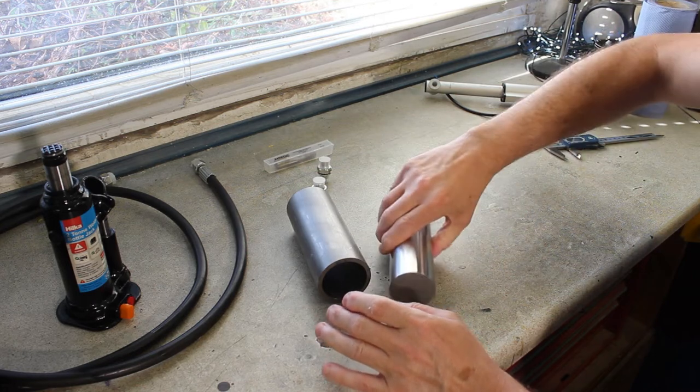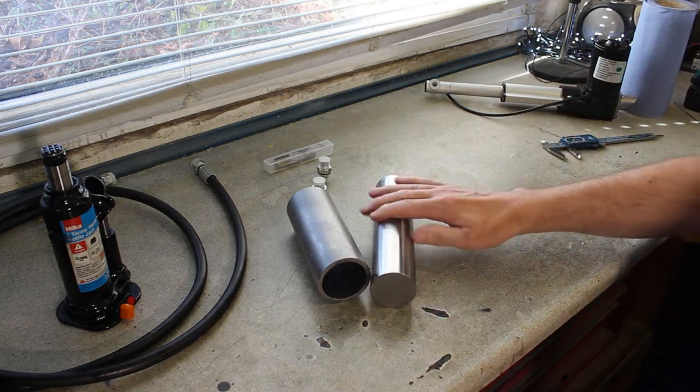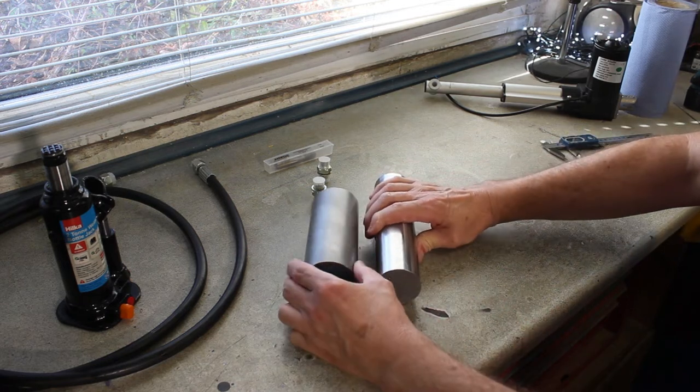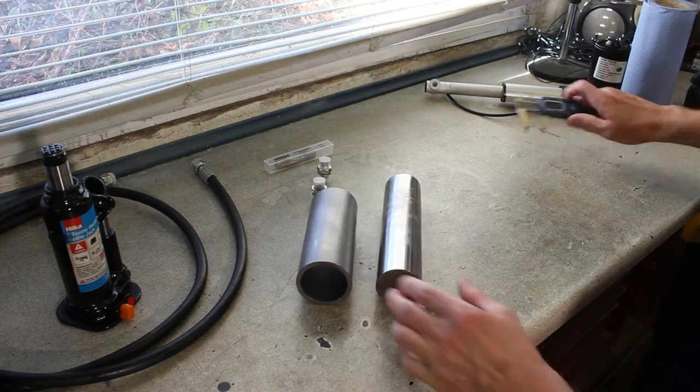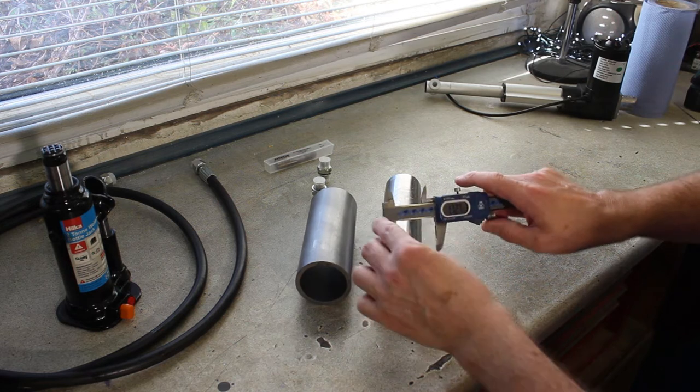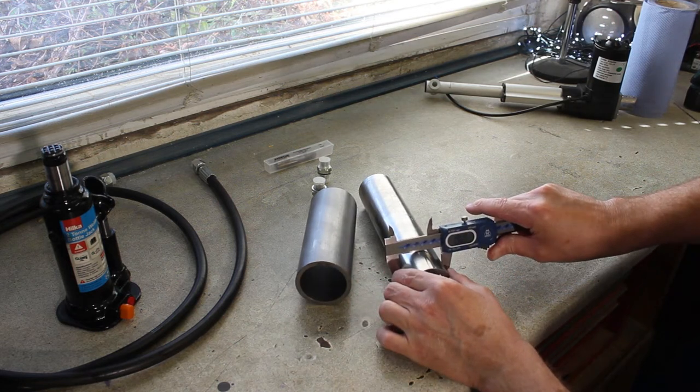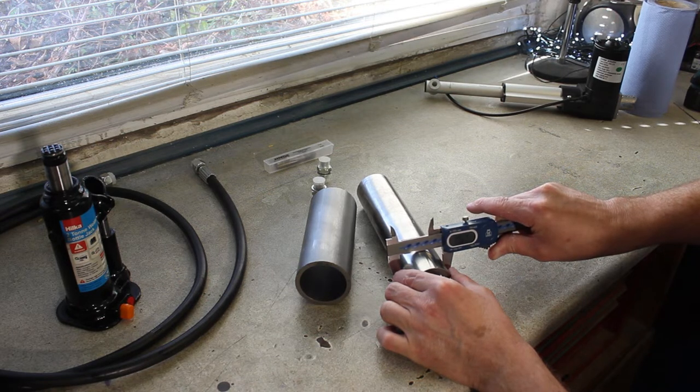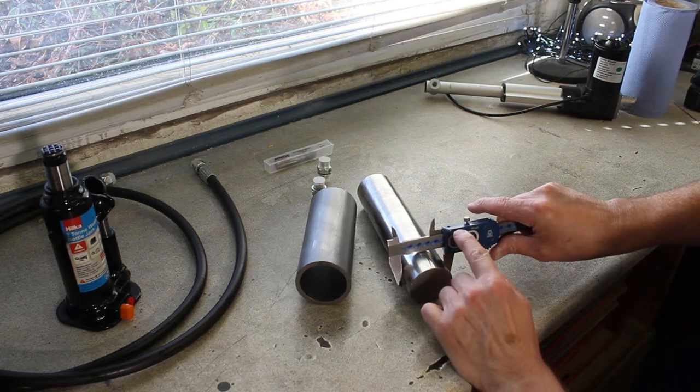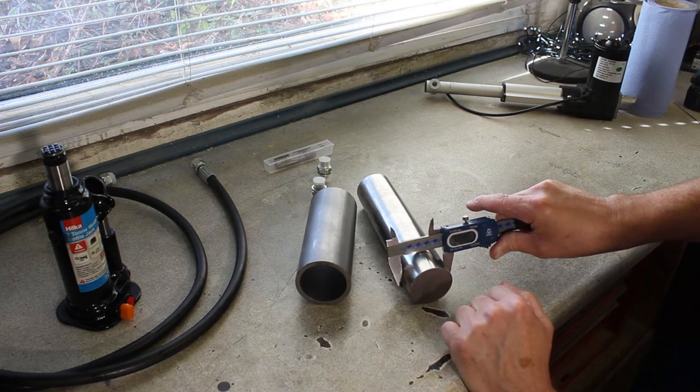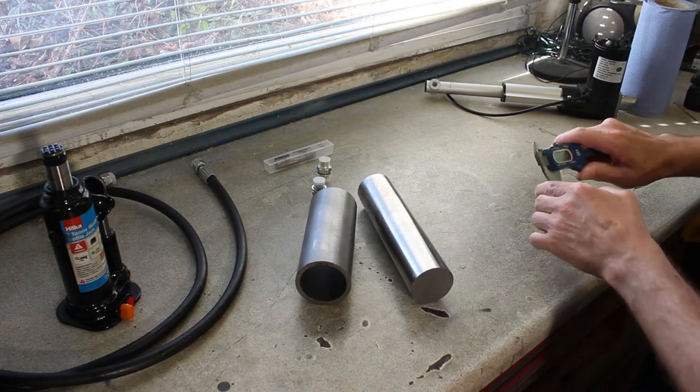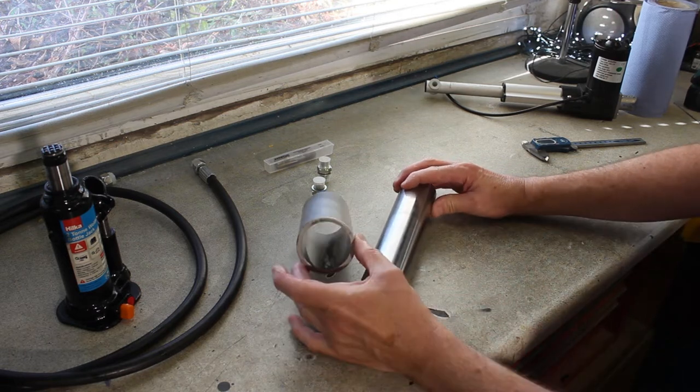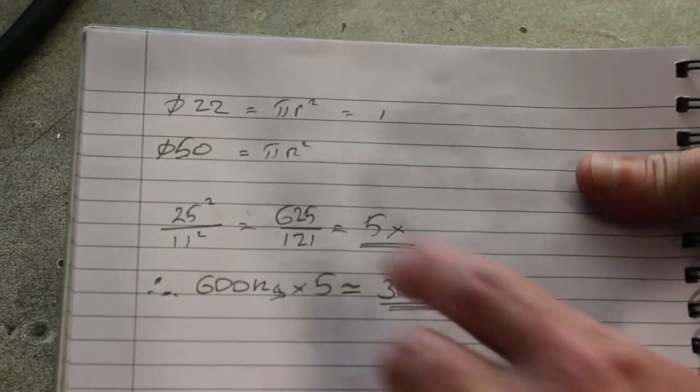Now if you saw my video on where to get scrap metal, you'll have seen I've been skip ratting. This is 50 mil or just shy is 1.97 inches or 50 dead nuts on millimeter, piece of hydraulic ram and hydraulic cylinder.